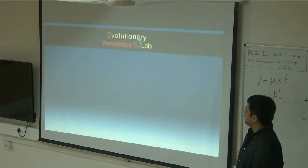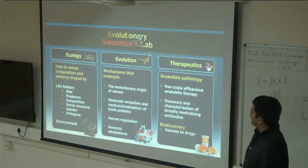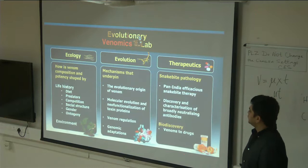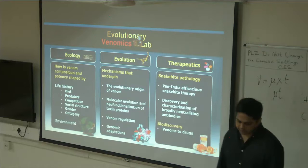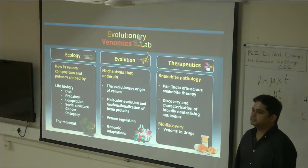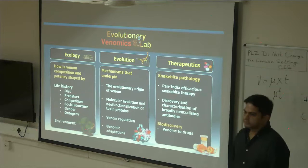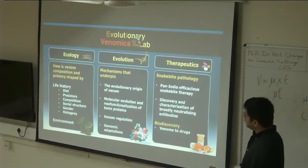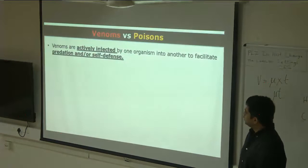As Praveen said, my lab is mostly interested in three major aspects of research. We are interested in understanding how ecology and evolution shape venoms — extensive factors like diet, predator pressures, social structure, and ontogeny. We are also interested in understanding how molecular and evolutionary mechanisms shape animal venoms. And the last aspect, which I will not talk about today, is snake bite therapeutics. The treatment for snake bites is not very effective in India, so we are also striving to develop advanced therapies.